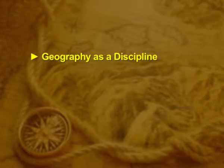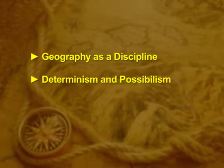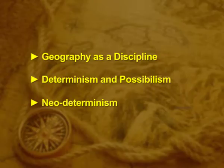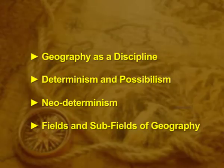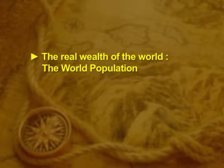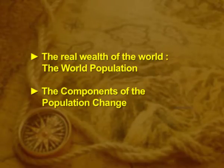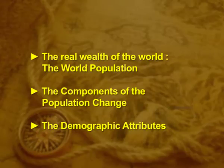Before we conclude, let us glance at the topics we have already learned. We have learned geography as a discipline, and about determinism and possibilism through two case studies. We have also learned about neo-determinism and the fields and sub-fields of geography. In the lectures that follow, we will study the real wealth of the world — the world population — including the components of population change and demographic attributes. Thank you.